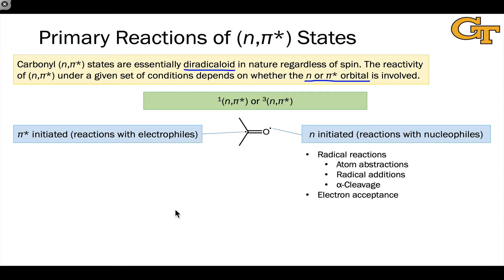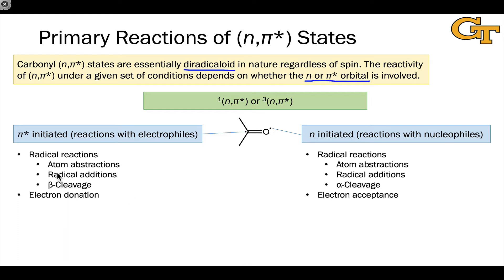On the other side of the coin, we have pi*-initiated reactions with electrophiles, where the carbonyl's pi* electron is acting as a nucleophile. These include atom abstractions of electrophilic bonds, radical additions to electron-poor pi systems such as alpha-beta unsaturated carbonyls, and beta cleavage reactions where the bond that breaks is between the alpha and beta carbons — under the influence of the nucleophilic pi* electron. Typically, what departs with the radical electron will be a leaving group of sorts, a relatively electronegative atom. The pi* electron is also happy to be donated to an electron acceptor in an electron transfer process, due to its relatively high energy and nucleophilic nature.